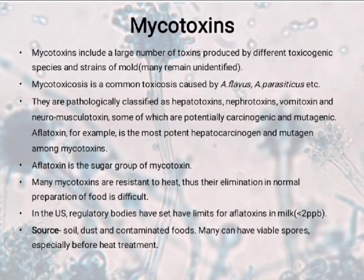Mycotoxins include a large number of toxins produced by different toxicogenic species and strains of mold. Mycotoxicosis is a common toxicosis caused by Aspergillus flavus, Aspergillus parasiticus, etc. They are pathologically classified as hepatotoxins, nephrotoxins, vomitoxins, and neuromuscular toxins. Some of which are potentially carcinogenic and mutagenic — aflatoxin, for example, is the most potent hepatocarcinogen and mutagen among mycotoxins.